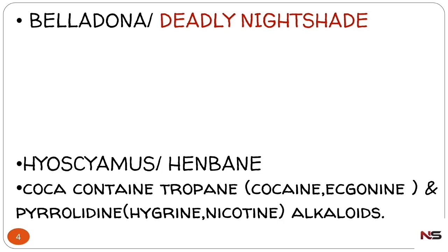Hyoscyamus has the synonym henbane. Coca contains two types of alkaloids: tropene alkaloids and pyrrolidine alkaloids. Under tropene alkaloids, cocaine and ecgonine are present. Under pyrrolidine alkaloids, hygrine and nicotine are present. So coca contains both tropene and pyrrolidine alkaloids.